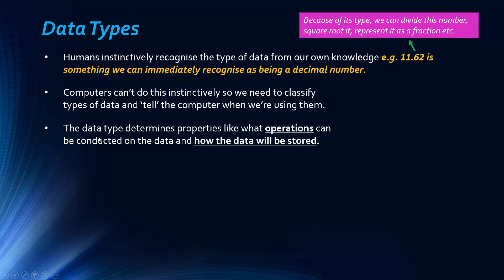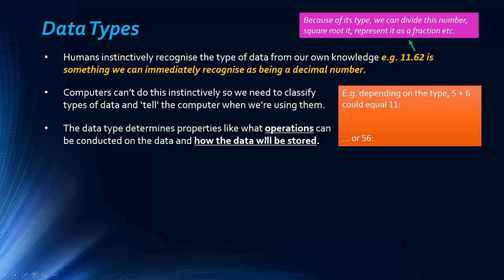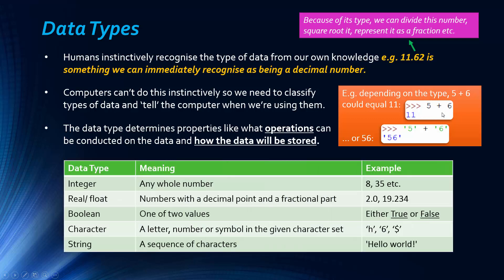The data type determines certain properties like what operations can be conducted on the data and how the data will be stored. As a clear example of how the data type matters, depending on the type, 5 plus 6 could equal 11 or it could equal 56. Here we're telling the computer that this is a character, and here that it's an integer. The operation is quite different depending on the data type.